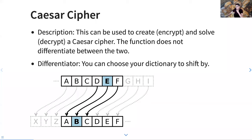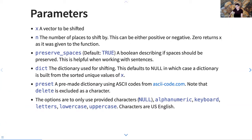What sets my version apart is you can choose your dictionary to shift by. Here's a graphic from Wikipedia showing what's going on: if you shift by three, your A's become X's, your B's become Y's, C's become Z's, and so on. It takes quite a few parameters.